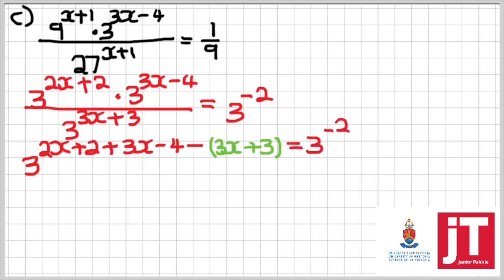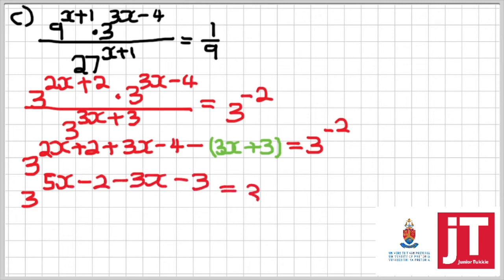Simplifying that expression, we're going to get 3 to the power 5x minus 2, minus 3x minus 3, is equals to 3 to the power negative 2. Again, fully simplifying it, we get 3 to the power 2x minus 5 is equals to 3 to the power negative 2.